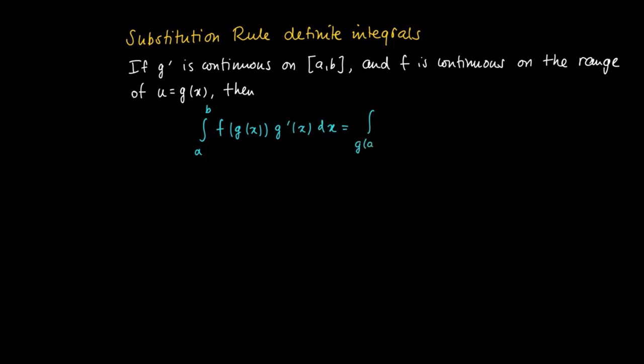So g(x) ranges from g(a) to g(b). So now we can replace this integral by the integral from g(a) to g(b) where we made the substitution u equals g of x. So we get the integral from g(a) to g(b) of f(u)du.